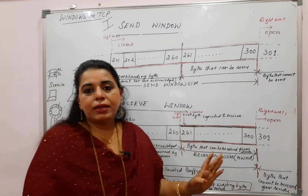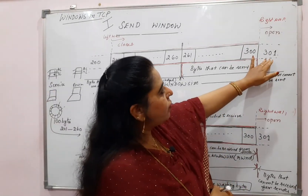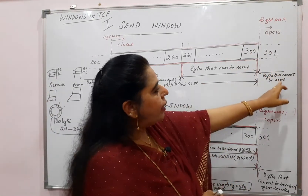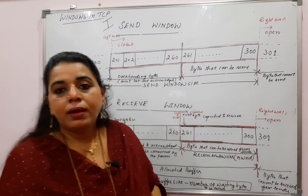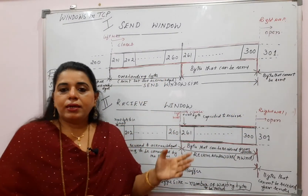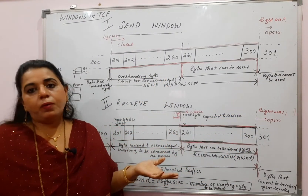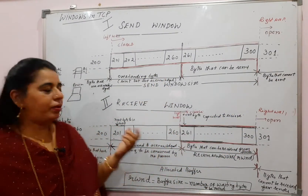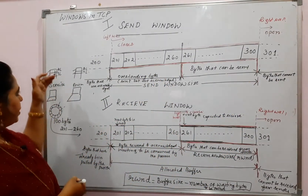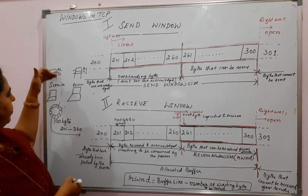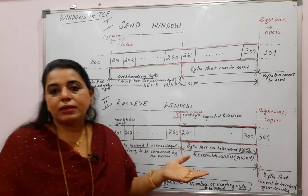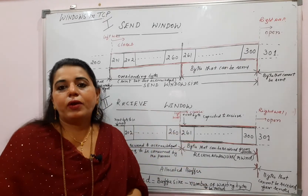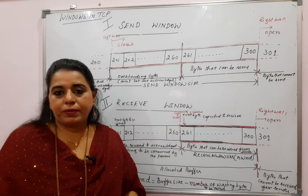The sender has not yet sent those bytes. What about byte 301 onwards? Those are bytes that cannot be sent, because there is no place to store them in the buffer. From 301, if the application layer is sending, those bytes cannot yet be included in the buffer.